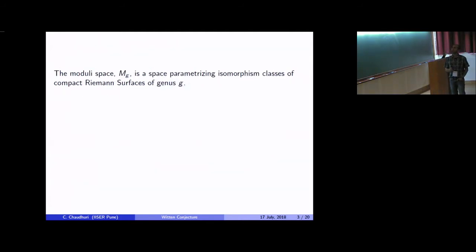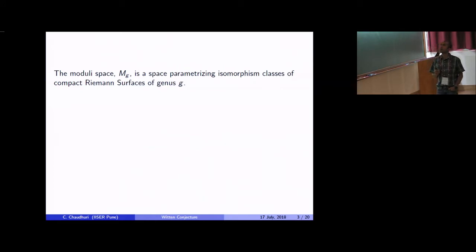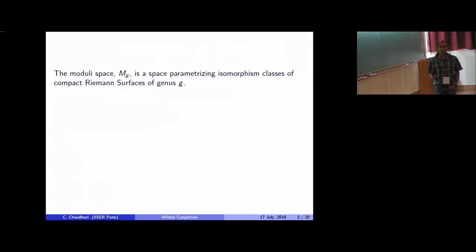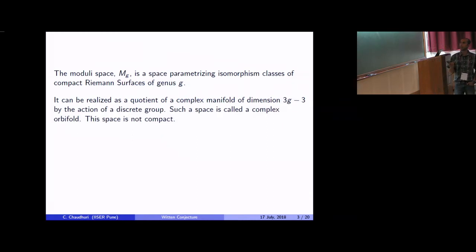The genus of a surface is just the number of handles: the sphere has genus zero, the torus has genus one, and then you have the higher genus surfaces, which are much more mysterious objects. You can construct a space which parametrizes all compact genus G Riemann surfaces up to isomorphisms — by holomorphisms. Although it's not a complex manifold, it can be shown that this is a quotient of a complex manifold of dimension 3G minus 3 by a finite group. Since the action of the group is not free, the quotient is not in general a manifold, but a complex orbifold. This space is also not compact because Riemann surfaces can degenerate to things which are not surfaces.